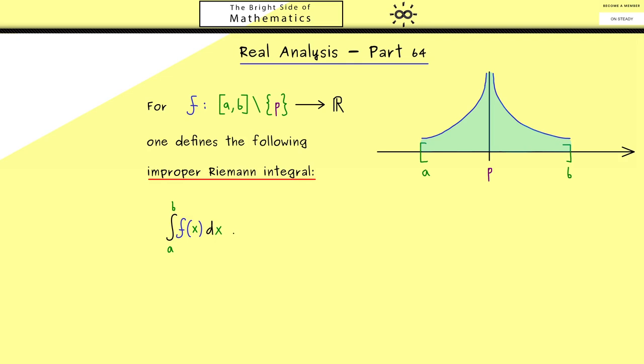We simply define it as the sum of two limits. The first limit should give us the left-hand side of the area, which means we integrate from a to p minus epsilon. And for the second limit we want to have the right-hand area, and therefore we integrate from p plus epsilon to b.